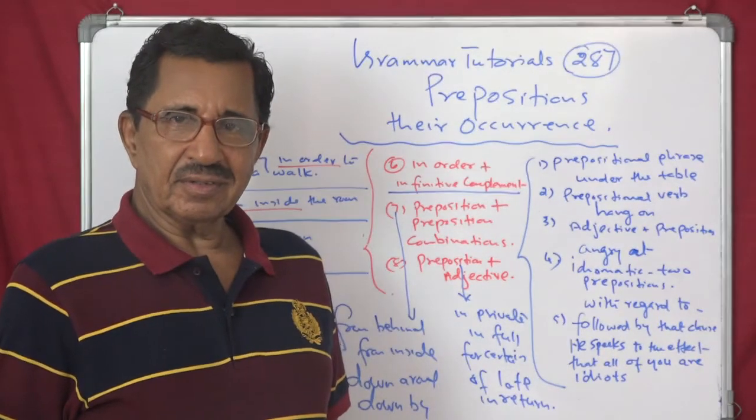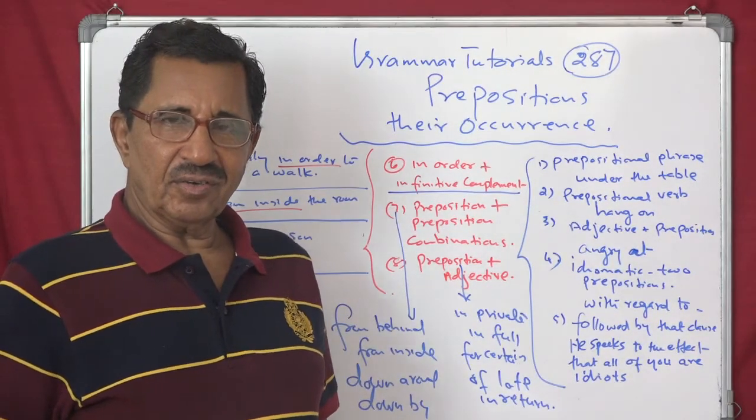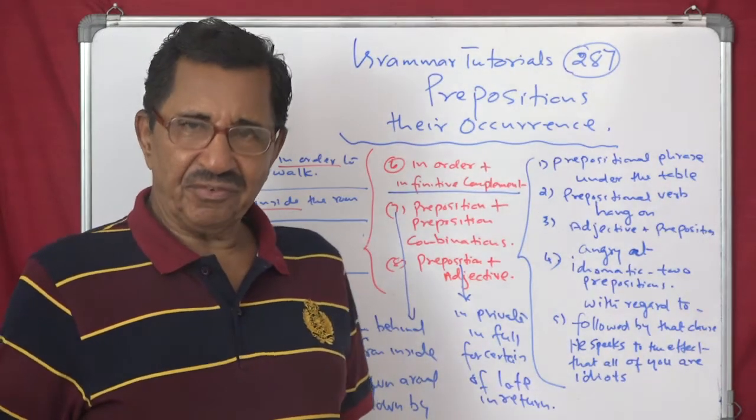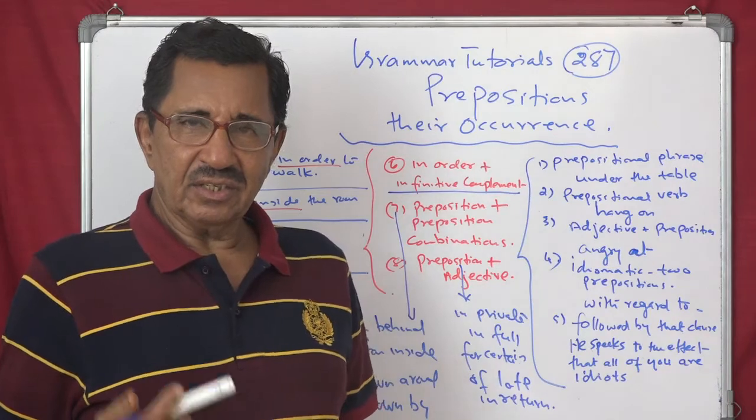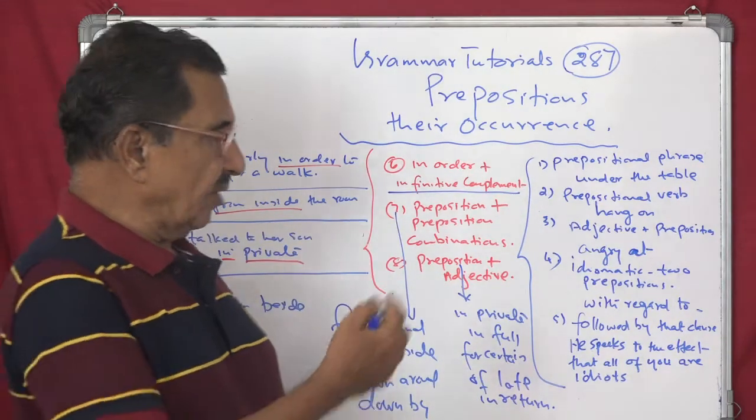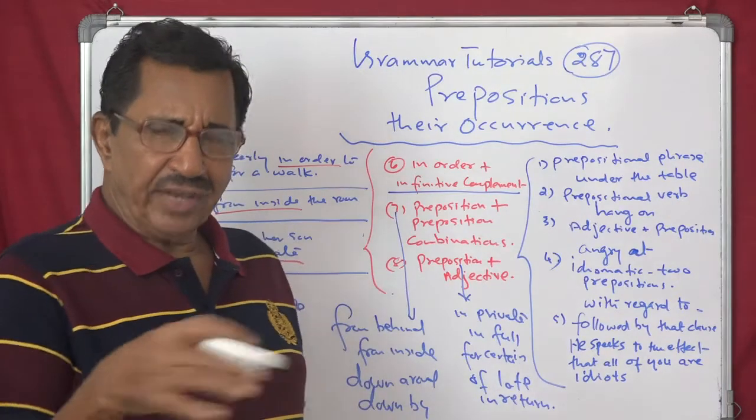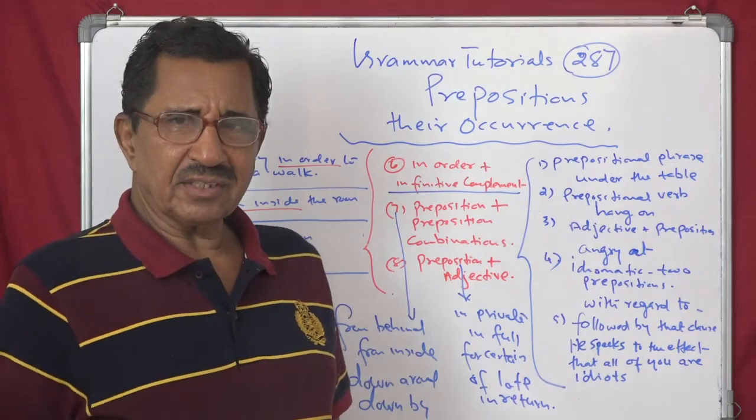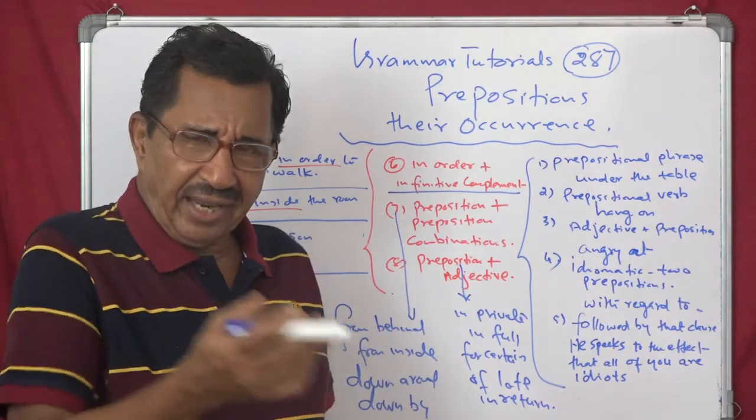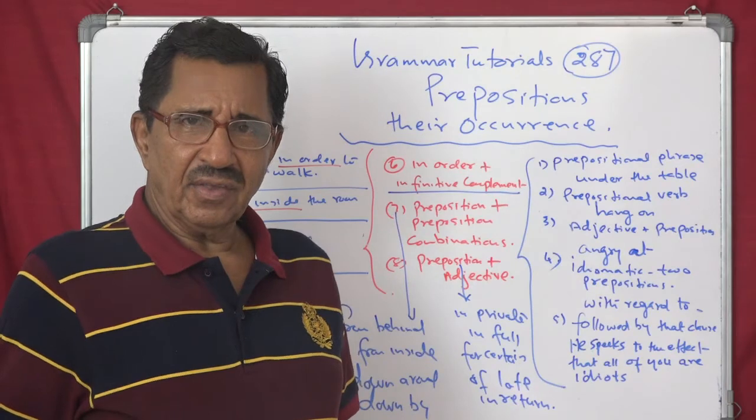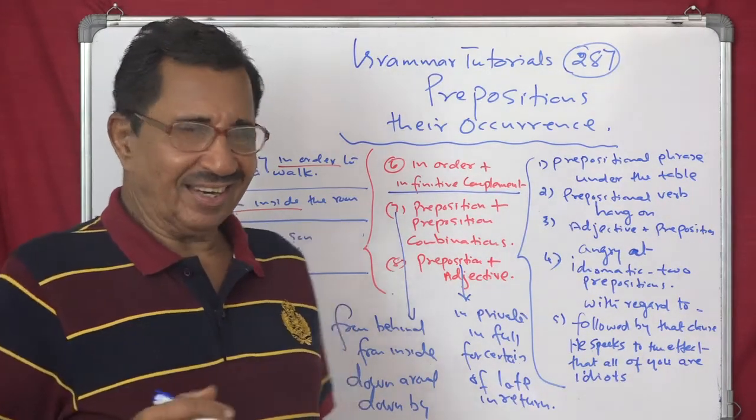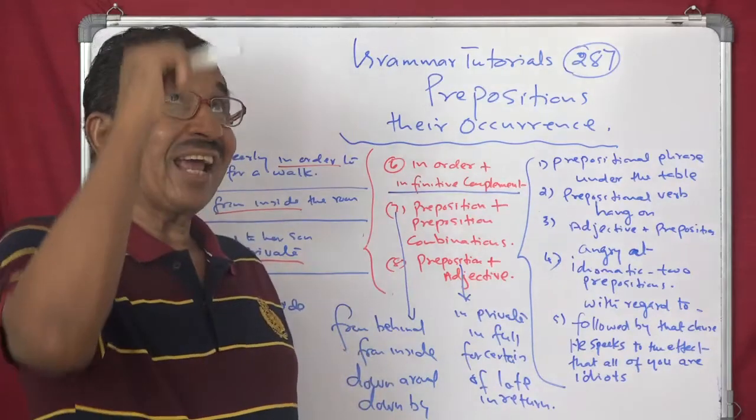Prepositional verb: hang on. Depend on. Then you have got stand for. Stand for means to support. Stand for. And then you have got hang on means just wait. Wait. Without much a reasonable reason. Hang on. Hang on. Don't hang on the campus after the school closes. Don't hang on. Don't loiter. That means.